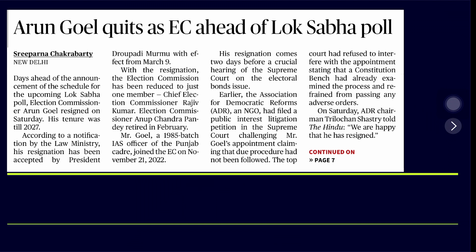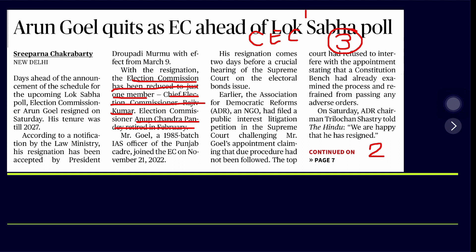There is a news article appearing today: Election Commissioner Arun Goyal has resigned. Although his tenure was supposed to be until 2027, and he was supposed to supersede the current Chief Election Commissioner and get the CEC post as well. With his resignation, the Election Commission has now reduced to one member — Chief Election Commissioner Rajiv Kumar. Election Commissioner Anup Chandra Pandey had retired in February. The Chief Election Commissioner is a three-member body: one CEC and two Election Commissioners.